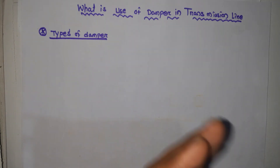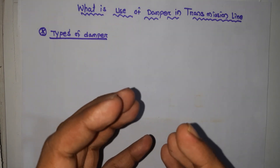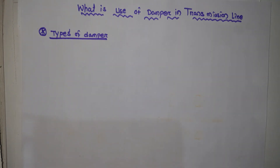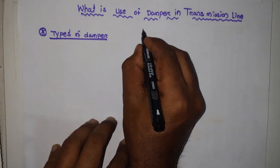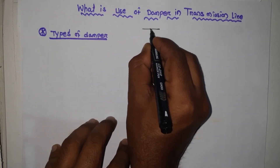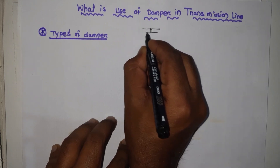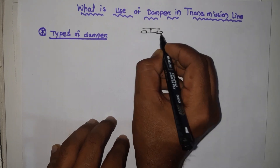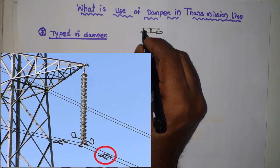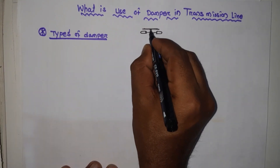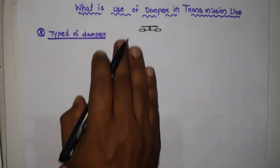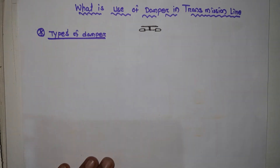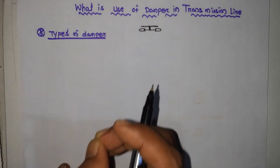You may or may not know about what is the damper used in transmission line. You could definitely see near the transmission line tower some structure like this — this is called a damper. This type of structure is one type of damper. In this topic we discuss how many types of damper are used in the transmission line.